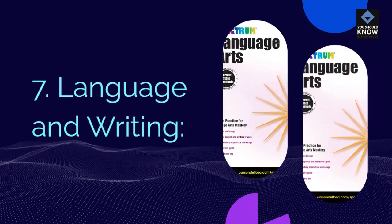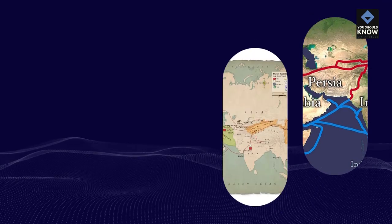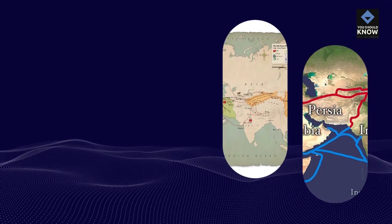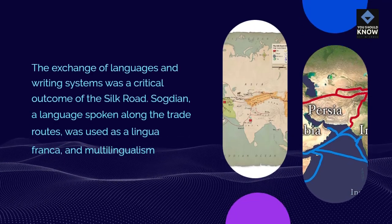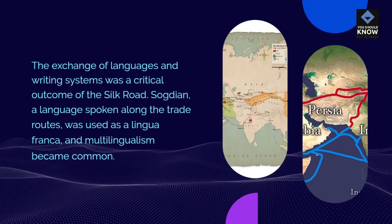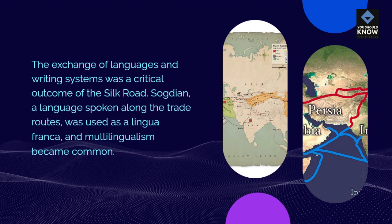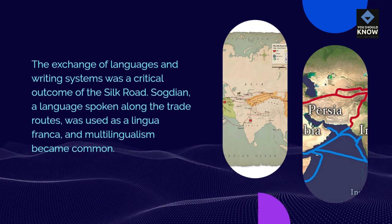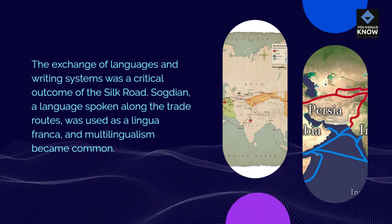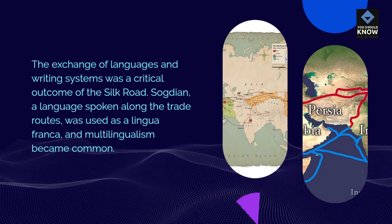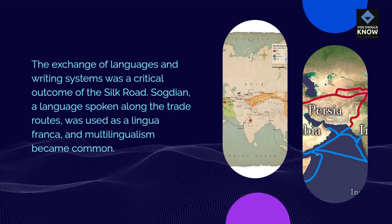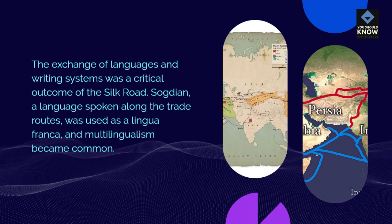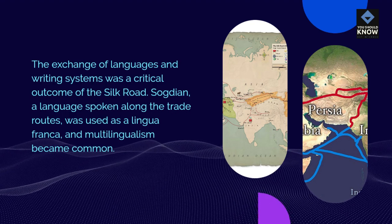Language and Writing: The exchange of languages and writing systems was a critical outcome of the Silk Road. Sogdian, a language spoken along the trade routes, was used as a lingua franca, and multilingualism became common.